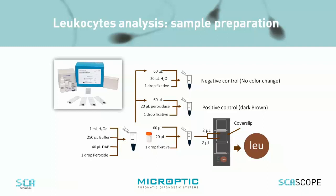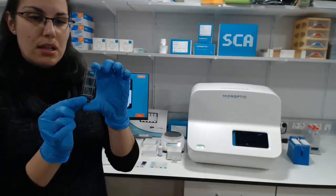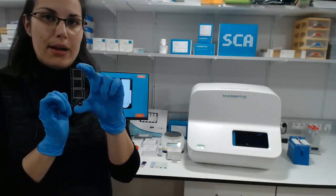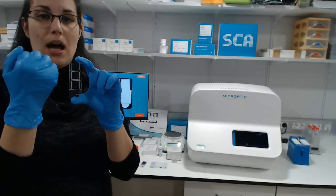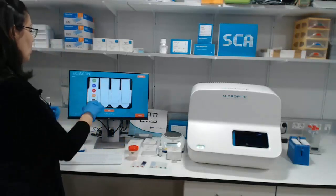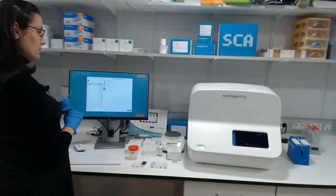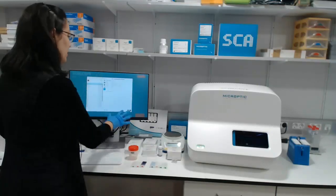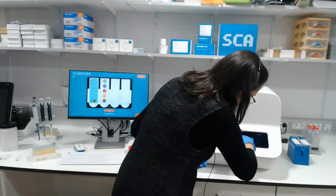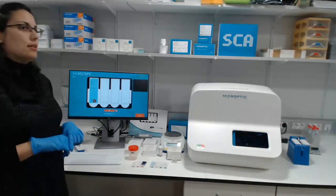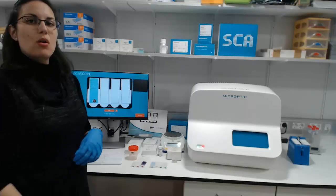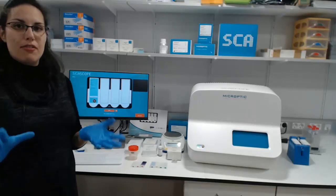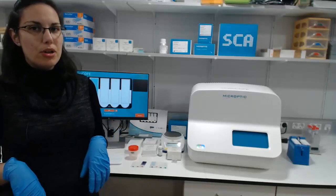Once the negative and positive controls are checked, we can mix this substrate with our semen sample and take two small drops and put them on an analysis area. The kit includes slides with three analysis areas, and you can choose one and load it in order to analyze it. We will select the patient, the reference, and introduce the area to analyze — for instance, area one — then locate the sample in the holder of the SCA scope and start the analysis. The system will capture 100 fields and classify all these types of cells captured.